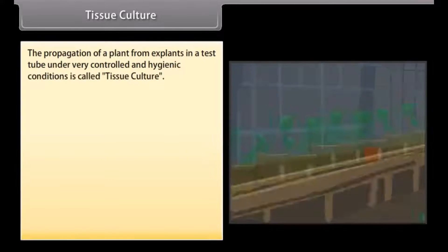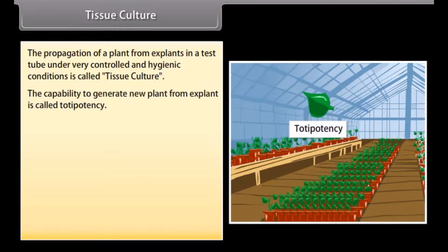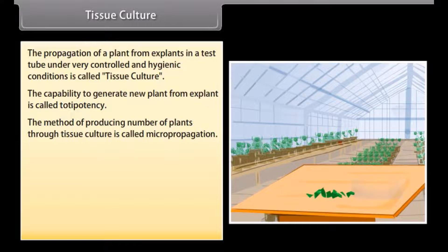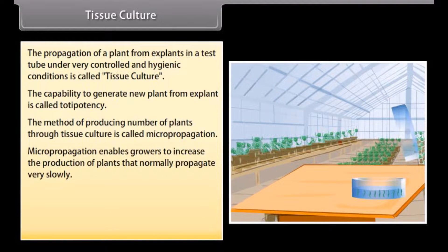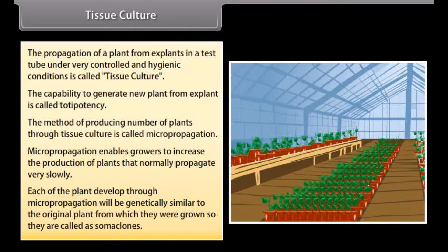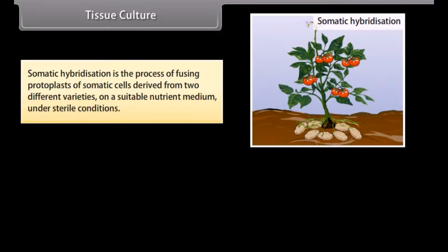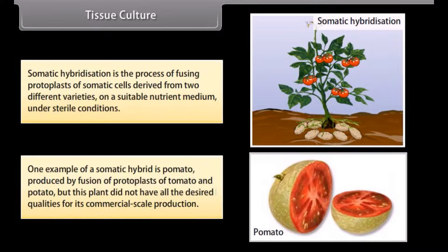Tissue culture: the propagation of a plant from explants in a test tube under very controlled and hygienic conditions is called tissue culture. The capability to generate a new plant from an explant is called totipotency. This method of producing a number of plants through tissue culture is called micropropagation. Micropropagation enables growers to increase the production of plants that normally propagate very slowly. Each plant developed through micropropagation will be genetically similar to the original plant, so they are called somaclones. Somatic hybridization is the process of fusing protoplasts of somatic cells derived from two different varieties on a suitable nutrient medium under sterile conditions. One example of a somatic hybrid is pomato, produced by fusion of protoplasts of tomato and potato, but this plant did not have all the desired qualities for its commercial scale production.